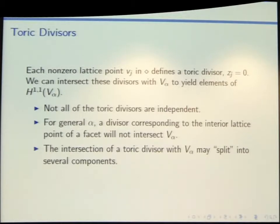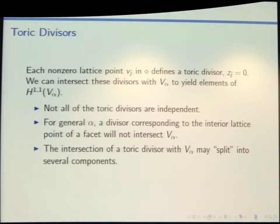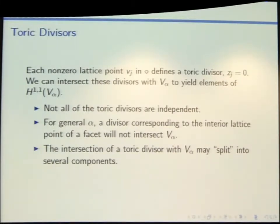In particular they have nice relationships between their Hodge numbers. If we have a nonzero lattice point in our polytope, we can think of that as giving us a divisor where we set the corresponding coordinate equal to zero. Taking the fan over the faces, if I intersect those divisors with my hypersurface I get some divisors in my variety — a whole long list of things that live in H^{1,1}. I'm not necessarily guaranteed these are all independent elements of cohomology; they might have some relation.